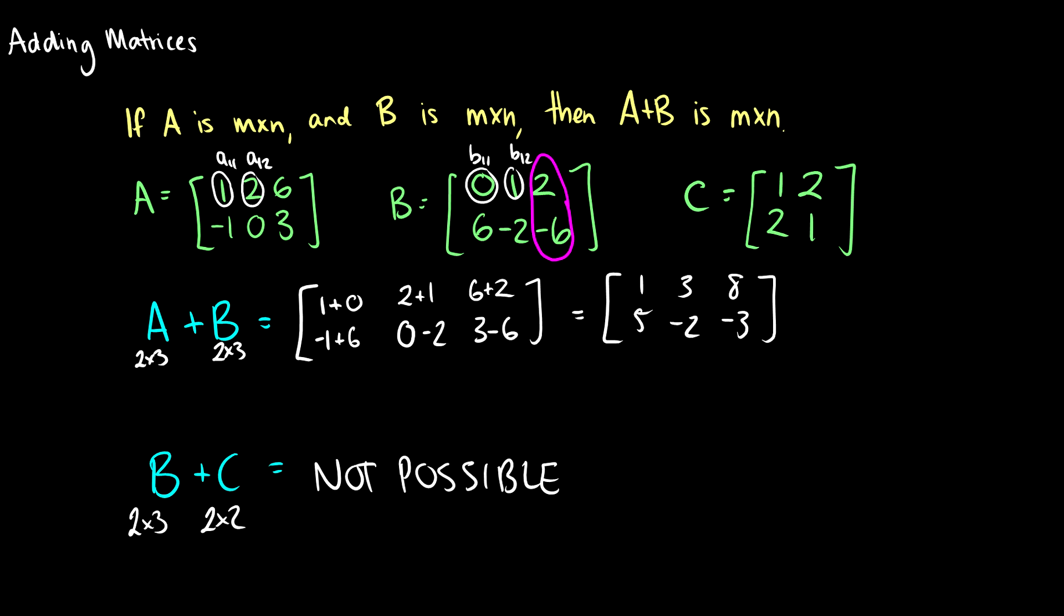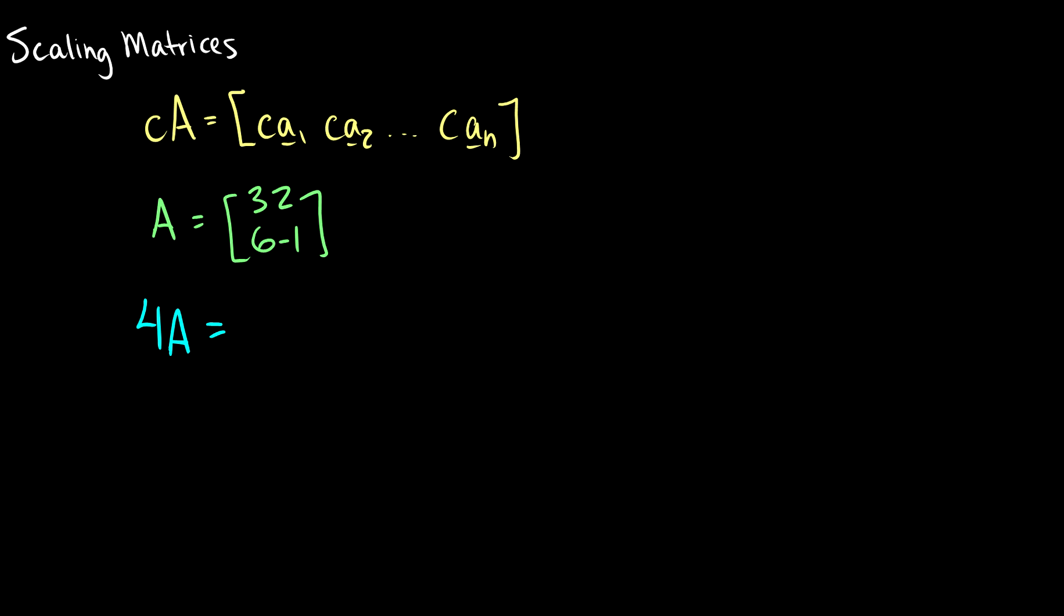So how do we scale them? Well, we have a bunch of vectors in our matrix and we scale it by some number C. We just distribute that number C throughout all of the vectors, just like vector multiplication.